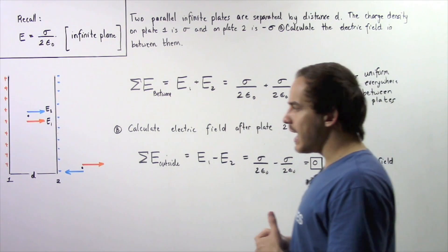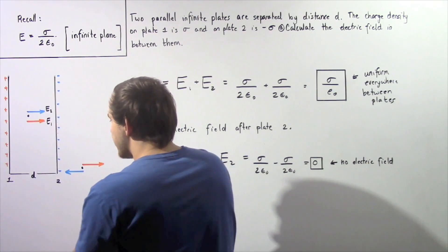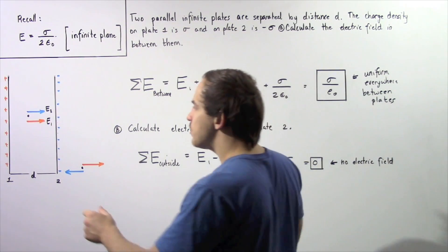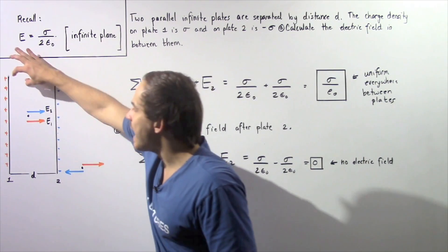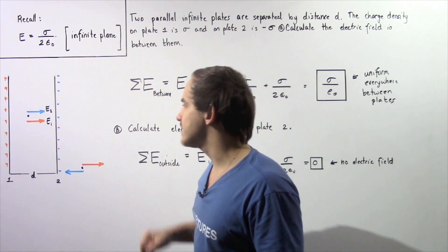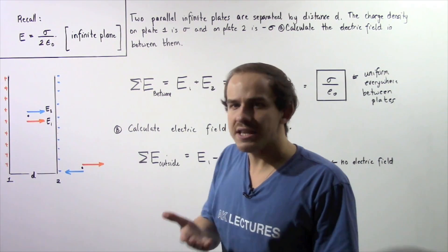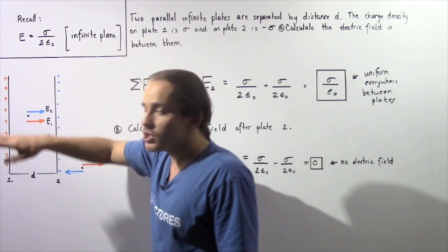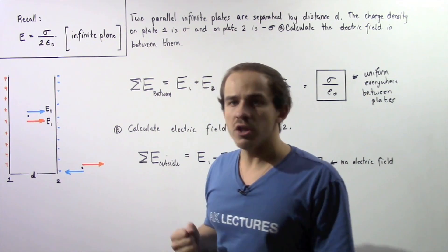Let's begin with part A. These are our two infinite plates, and this is the distance d between them. Plate number 1 has a positive density, meaning it has a positive charge, while plate number 2 has a negative density, so it has a negative charge. Let's choose any point in between our two plates and determine the two electric fields and the directions they point.